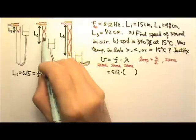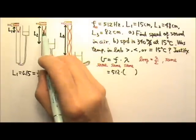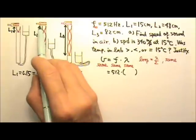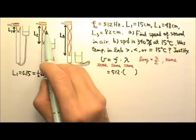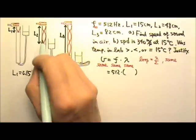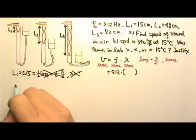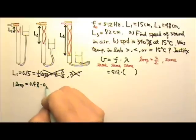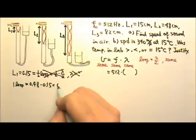So let's see. For this complete loop, it must be 48 centimeters minus 15. Because that's 48 centimeters, this is 15 centimeters. So from L2 and L1, we can find the length of one loop is 0.48 minus 0.15, which is 0.33.